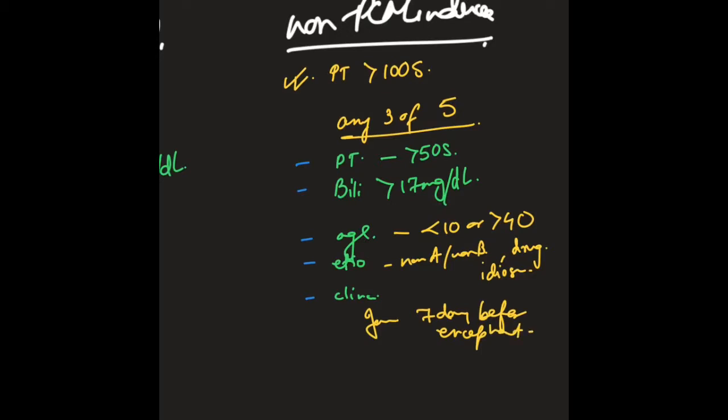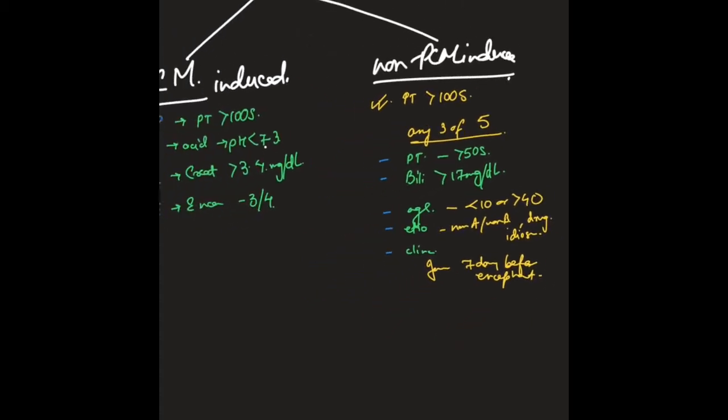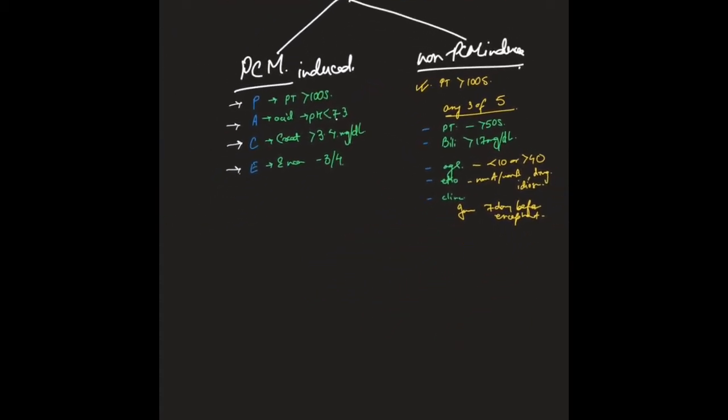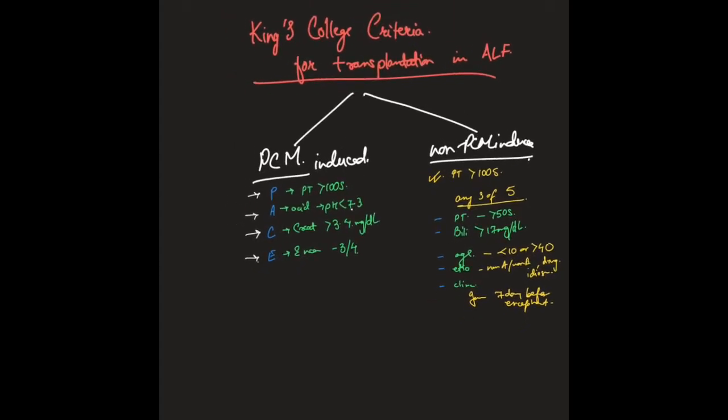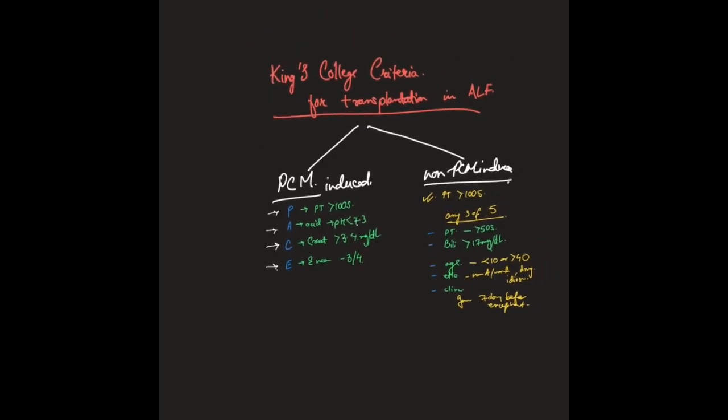So these are the things that you have to remember for the non-PCM induced. The MCQs generally ask for the data and you can see that prothrombin time should be greater than 100 seconds and pH less than 7.3. Another thing is about creatinine and bilirubin. That's it, I don't think you need to remember more than this.